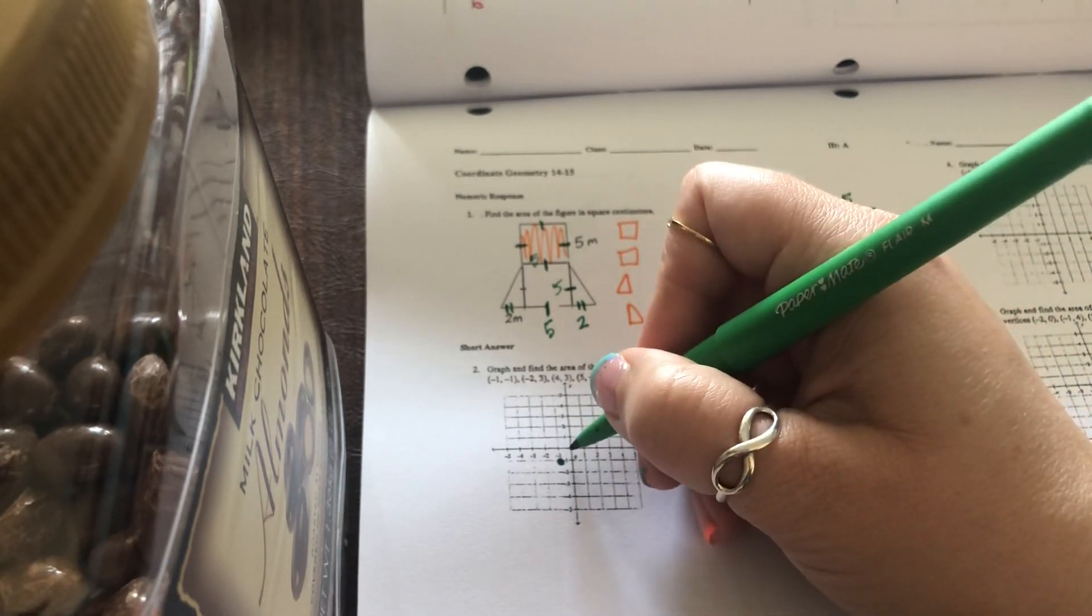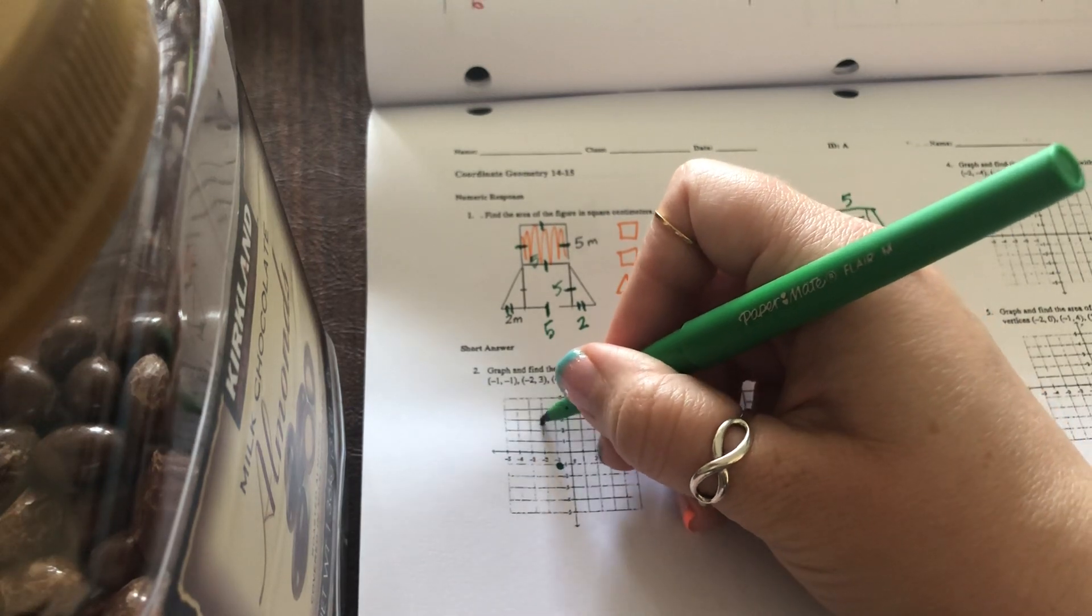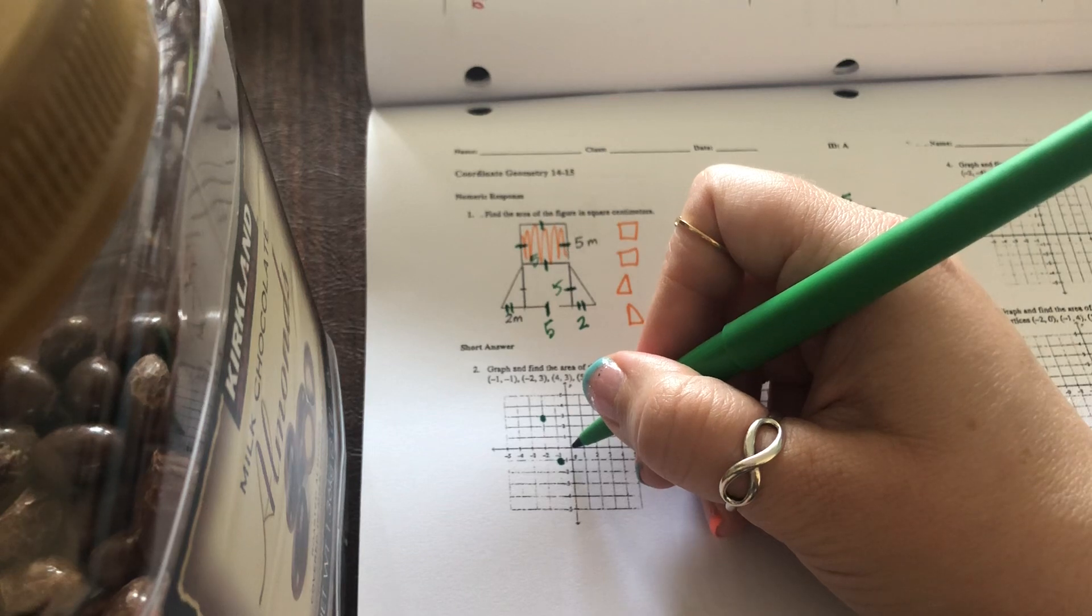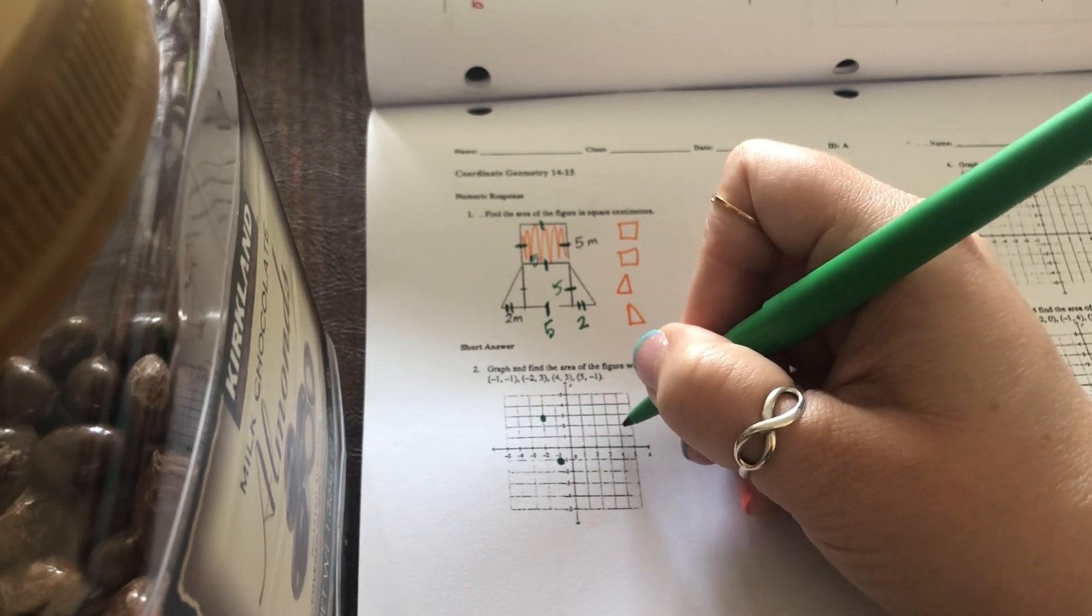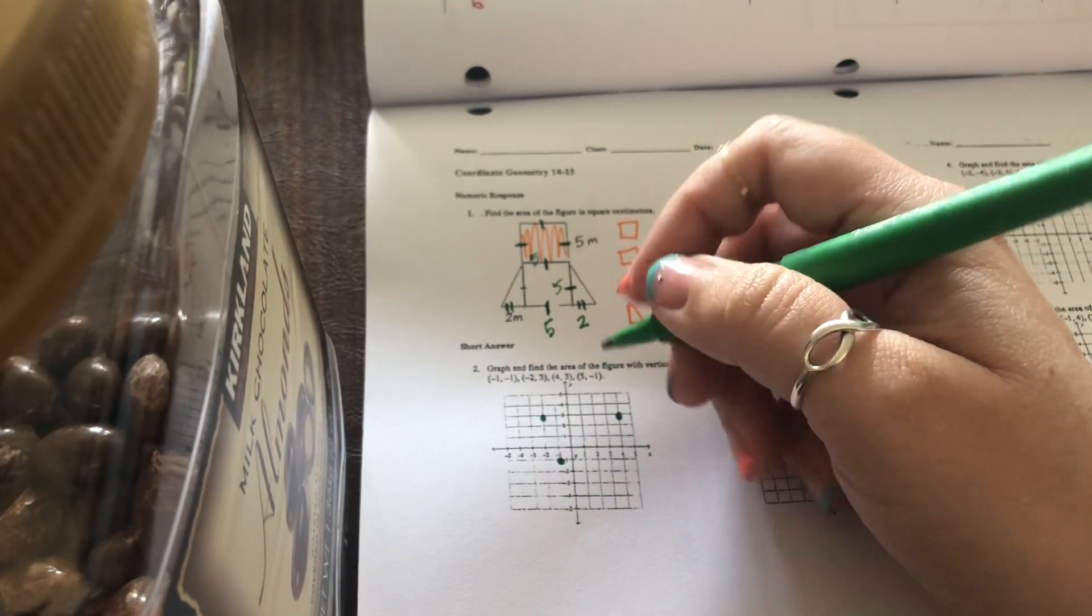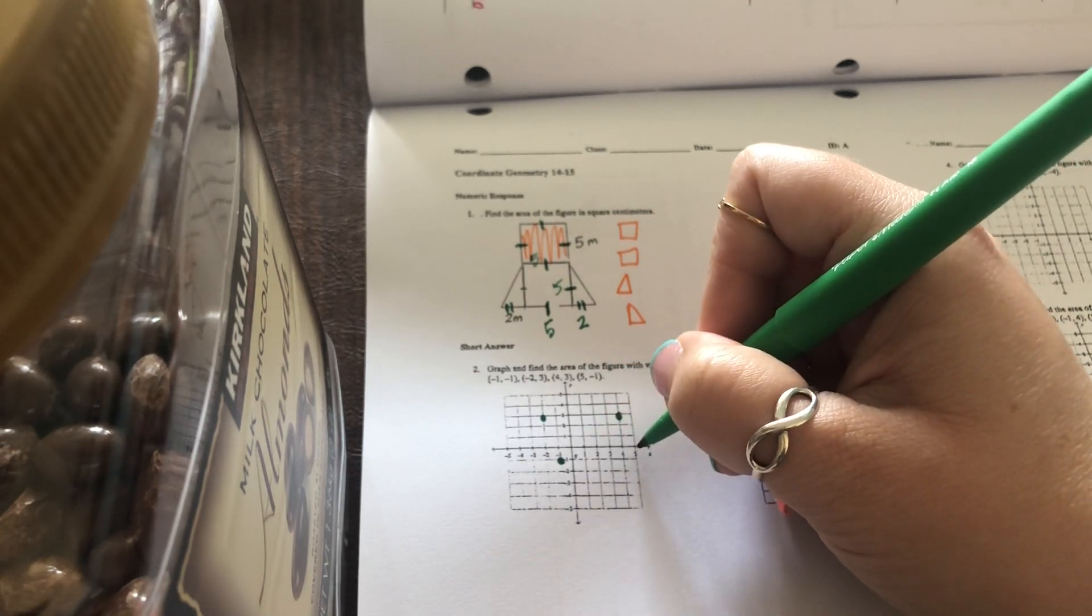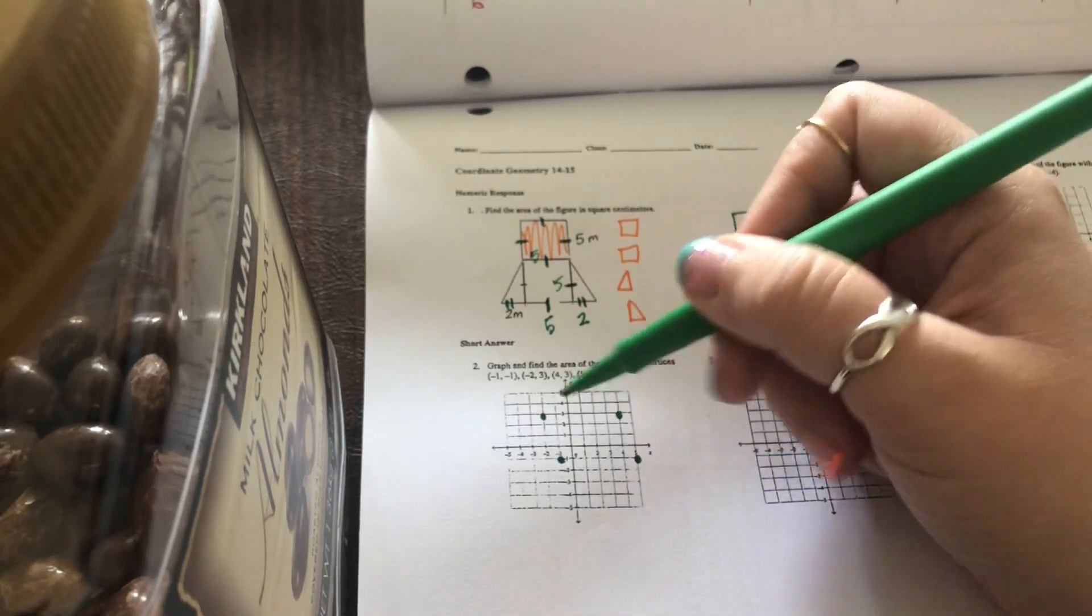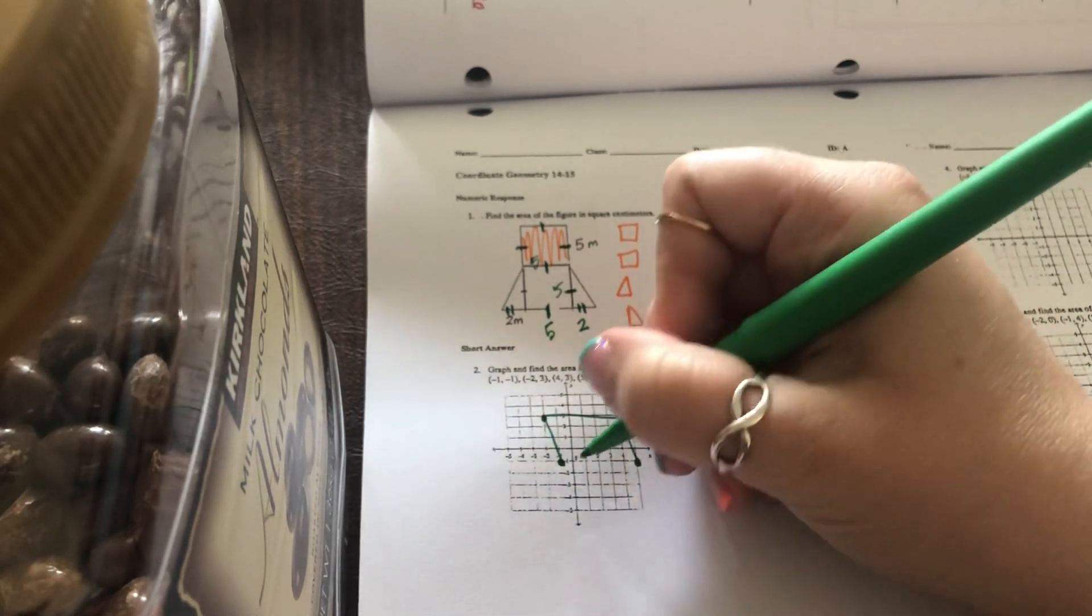My next point is negative two. So left two and positive three means up three. My next one is positive four. So start your origin again and go one, two, three, four to the right, and then one, two, three up. And then finally it's five negative one. So I'm going to go from your origin. One, two, three, four, five over to the right, and then down one. You had four coordinate points, so you should have four dots. Connect those. And what does that figure look like? Not a rectangle, but a parallelogram.